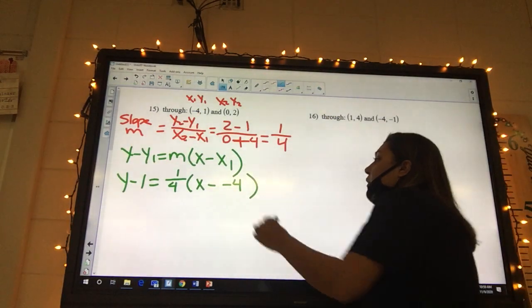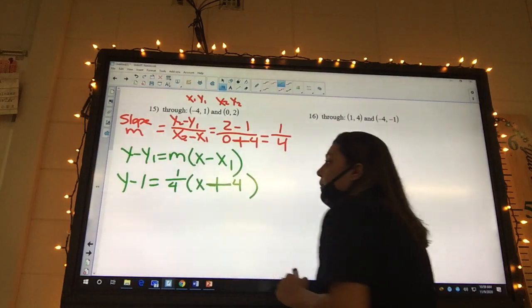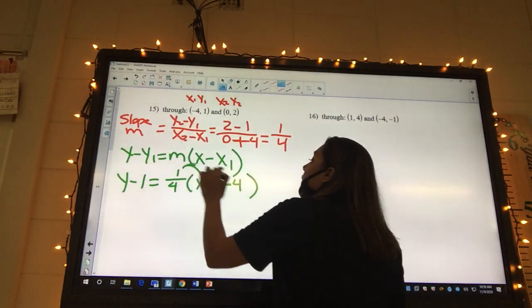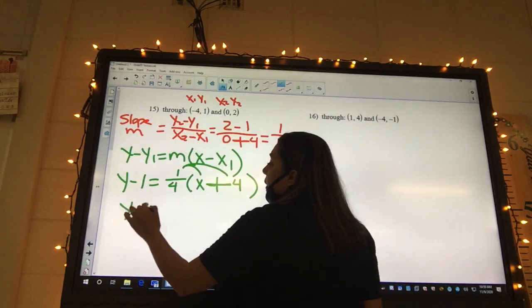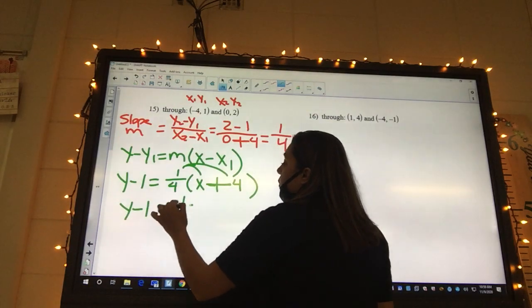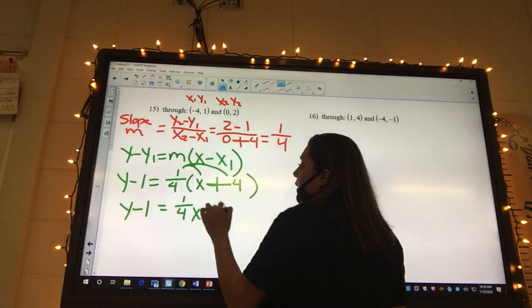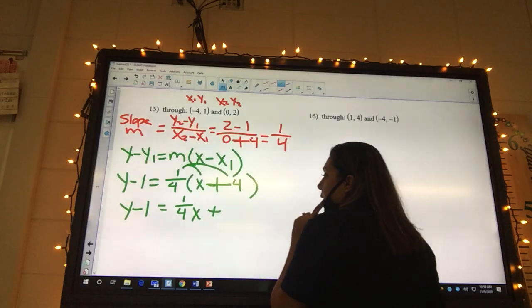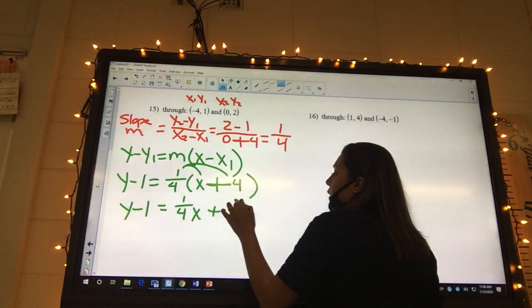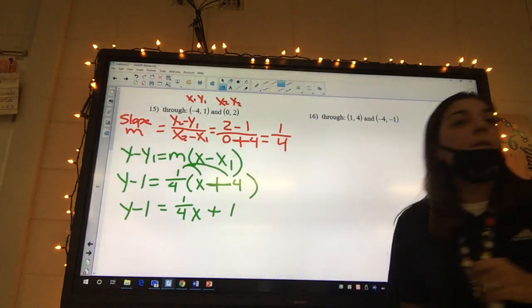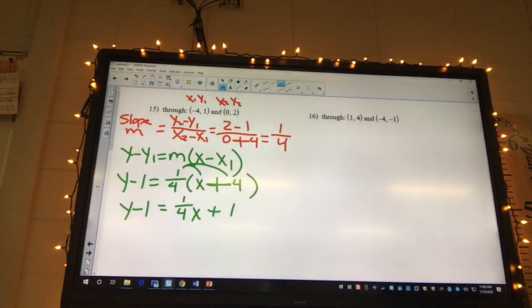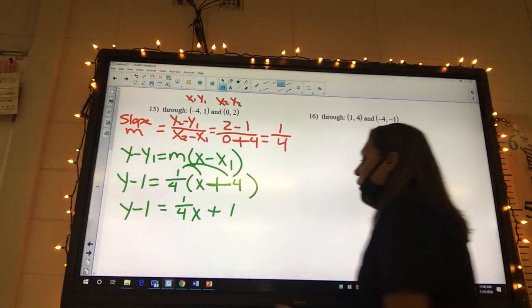We got y minus 1, my m is 1 fourth, x minus my x1 is negative 4. This one needs to become a plus, then distribute. So we're gonna have y minus 1 equals 1 fourth x plus 1. Okay, and then plus 1 on both sides.